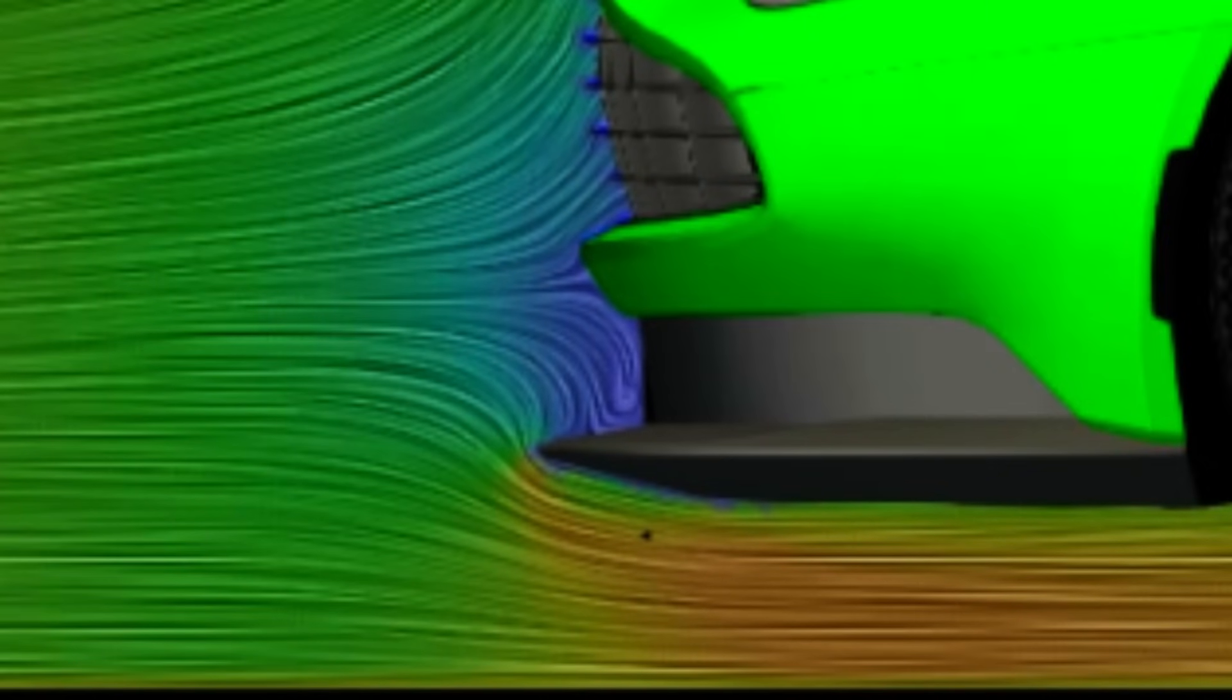If you have a short splitter, like we have here, the flow hitting it is vertical. It can't go around a sharp edge, stop, turn 90 degrees, and then flow underneath. Instead, it tries to flow around the sharp edge, can't, and then separates. So extending the splitter more forward aligns the flow with the splitter more.